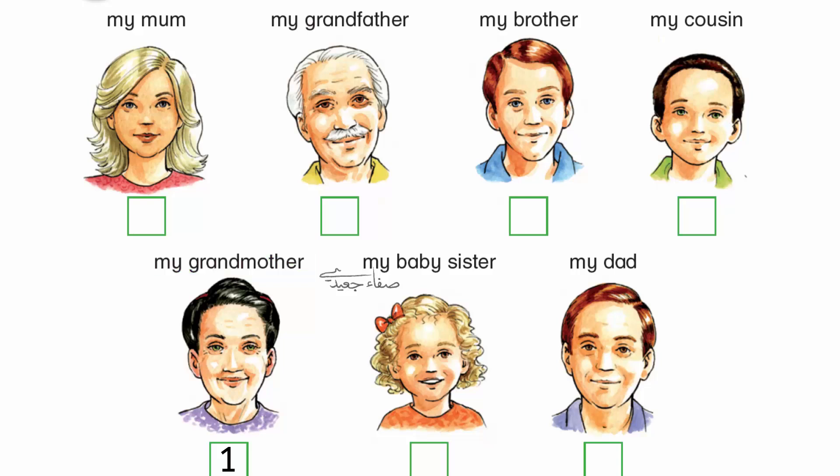2. She has red hair and brown eyes. 3. She has brown hair and green eyes. 4. She has white hair and brown eyes.